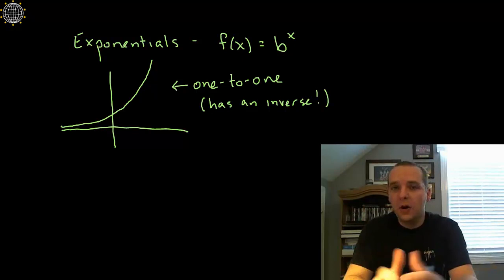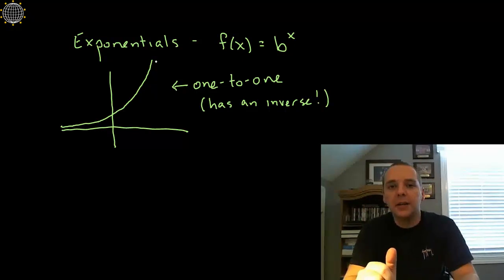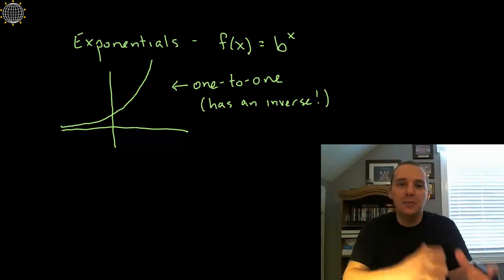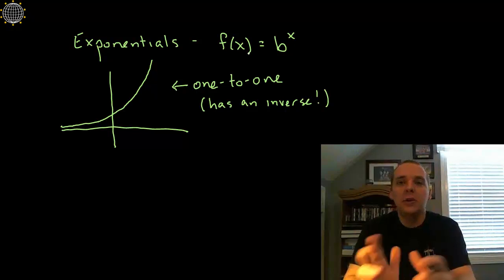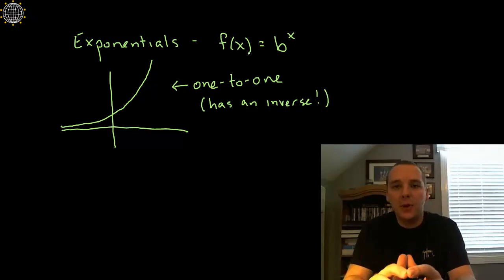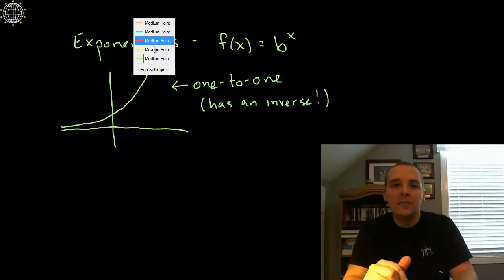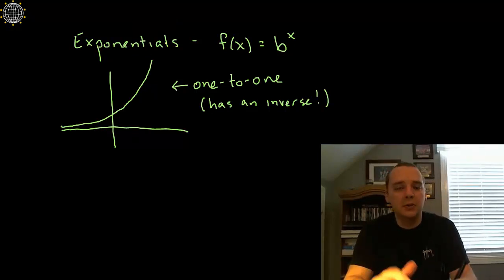So you'll recall from your algebra classes that an exponential function is something that's b to the x, where b is your base. So 2 to the x, 5 to the x, 10 to the x, the always popular e to the x - all these guys are exponential functions. And I really just want to highlight one feature about this guy. I know when we did the videos on exponentials we covered lots and lots of properties, but I want to key in on one thing.